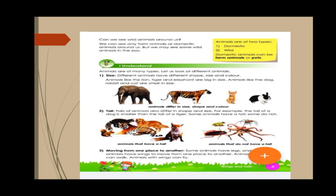Tails of animals differ from one another. Can you see a tail when it comes to a frog? Do cockroaches have a tail? Octopus, spider? No — you cannot see tails in frog, cockroaches, spider, octopus, and some other animals. Though rabbit has something on its back, it is not like a cat's tail — it looks like a small bush.